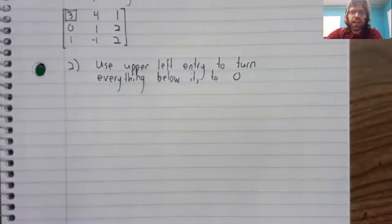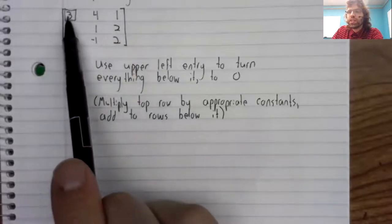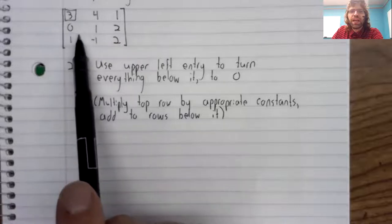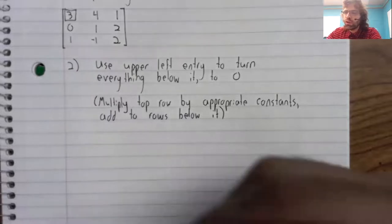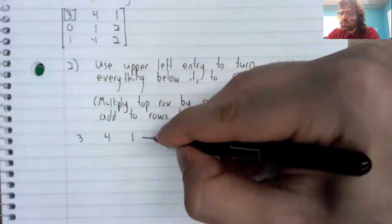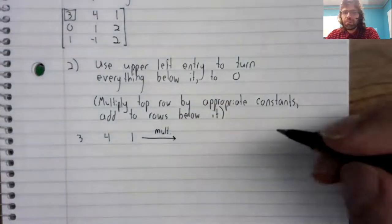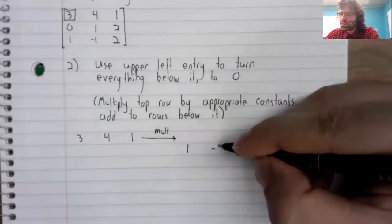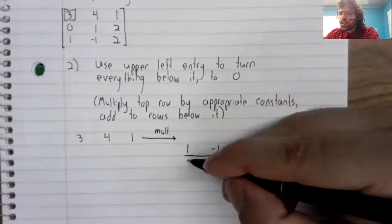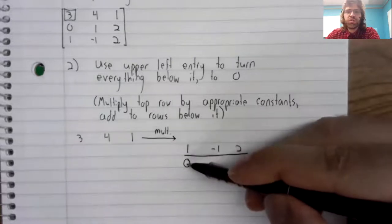And how are we going to do that? One of our elementary row operations is that we can take this top row, multiply it by a constant, and add it to this third row. So we're going to take the top row, multiply it by some constant, and add it to the third row. And we are going to do this in a way that this one turns to zero.